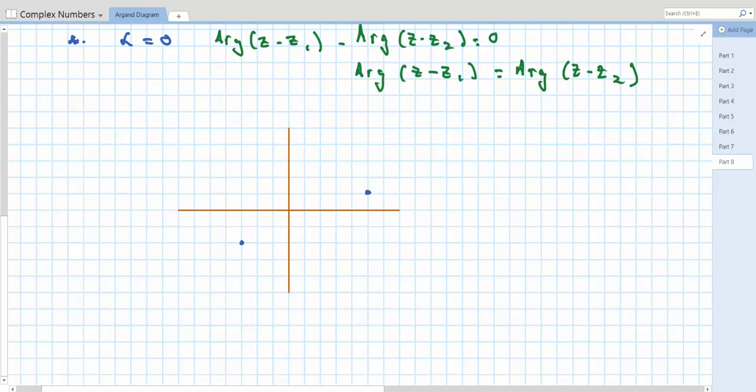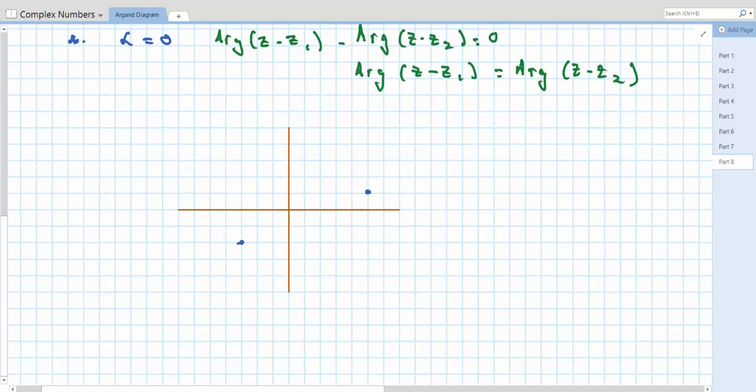Now, those angles must be the same. So just like before, where we had an interval of z1z2, we have an interval again.